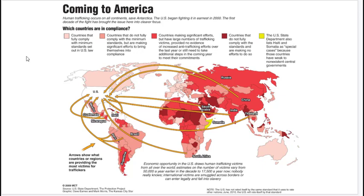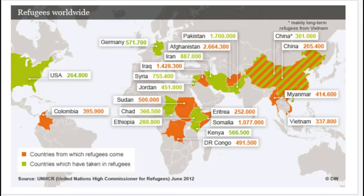Another type of forced migration is human trafficking. While we often think of slavery as history, human trafficking exists in the world today. When we discussed gender, this is a major issue in the developing world, where young girls are disproportionately involved. Human trafficking occurs on all continents; the U.S. began fighting it earnestly in the early 2000s. Maps show which countries and regions provide the most victims of human trafficking.